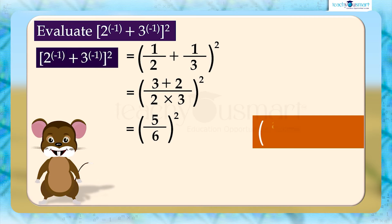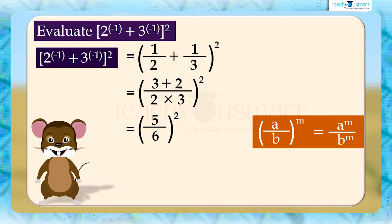Since (a by b) whole raised to m equals a raised to m divided by b raised to m, then (5 by 6) the whole square equals 5 square divided by 6 square, equals 25 by 36.